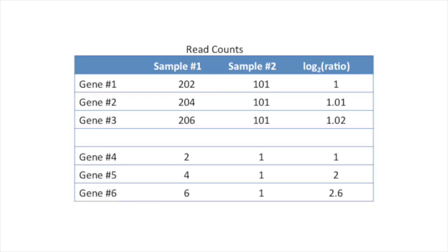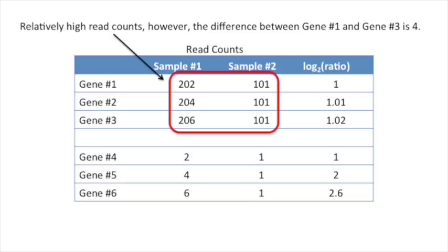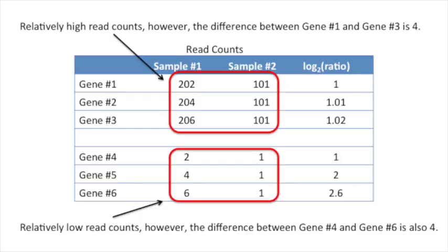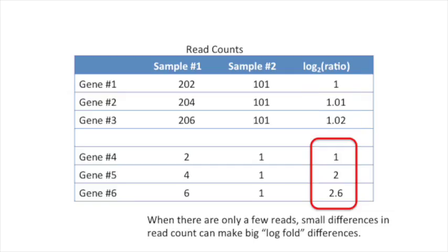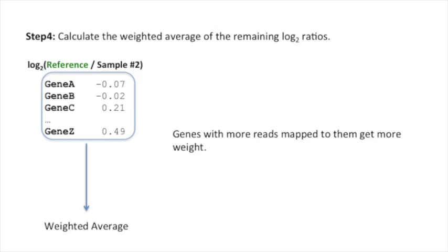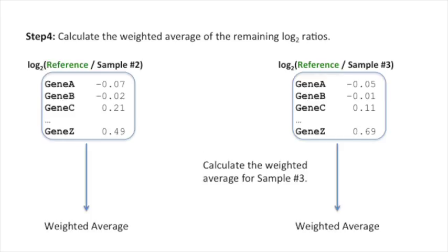Here's an illustration: a table of read counts for sample one and sample two with six genes, showing the log two ratio on the right. The first three genes have relatively high read counts, but the difference between gene one and gene three is four. The bottom three genes have relatively low read counts, and the difference between gene four and gene six is also four. When there are lots of reads, small differences in read count do not make big log fold differences. When there are only a few reads, small differences can make big log fold differences. So genes with more reads get more weight because they're less noisy, and we calculate the weighted average for sample three the same way.